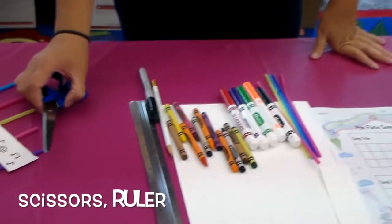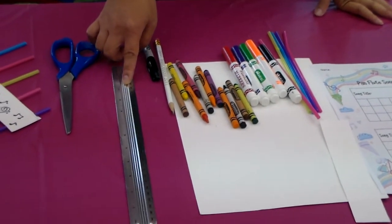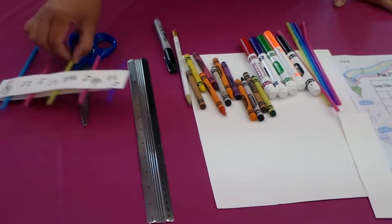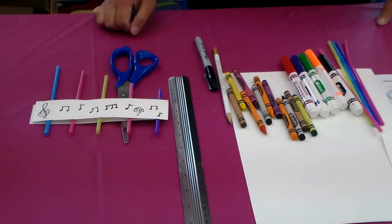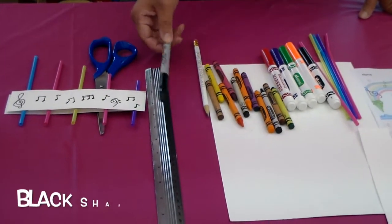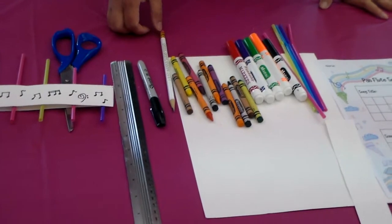All you need is first, of course, a scissor, ruler. Ruler is very important because without this we cannot measure how long the straw is and how long the construction paper is. So I have a black sharpie but if you don't have black sharpie you can use any other color. It's up to you.